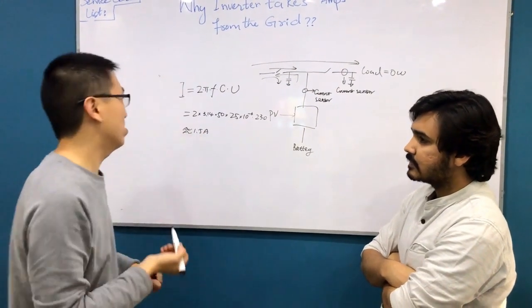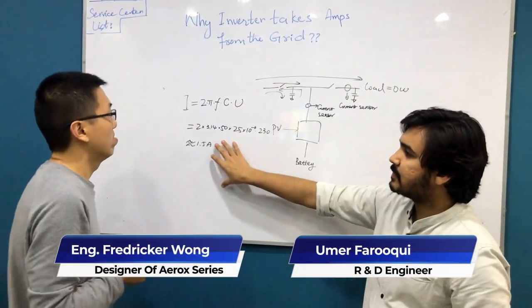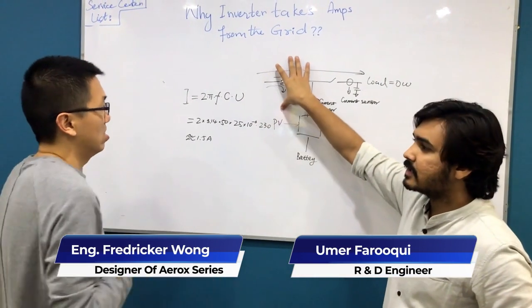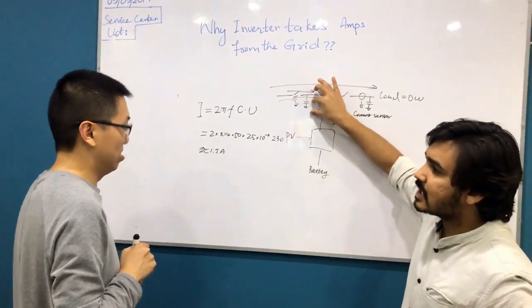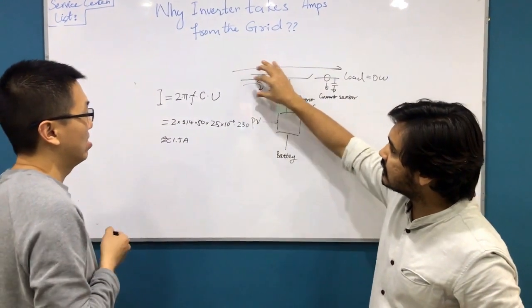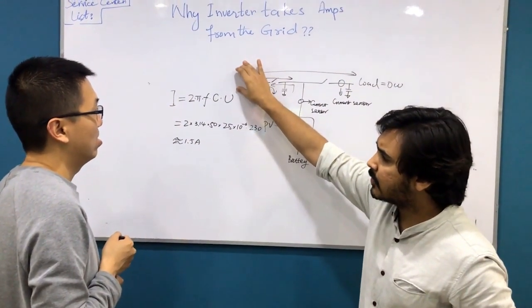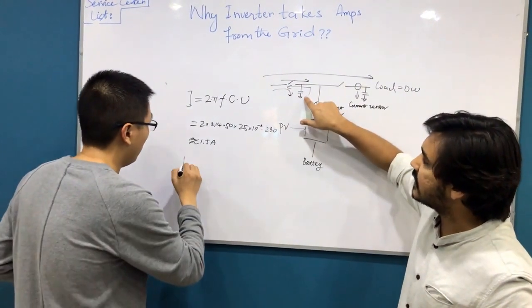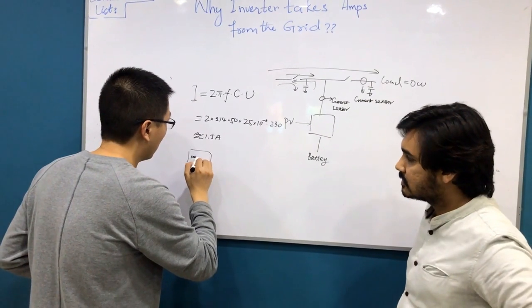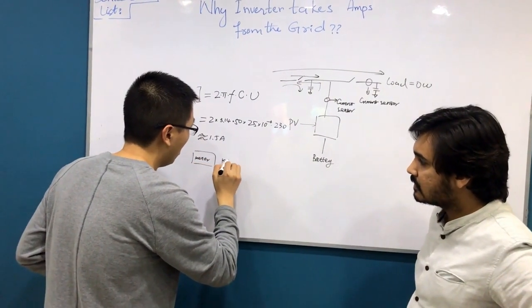So this is the reactive power that the inverter creates for himself to store the charge in the capacitors. And this doesn't produce any power from the grid. It is not consuming any power.